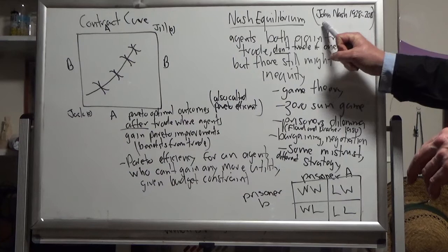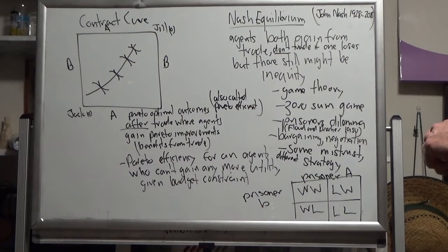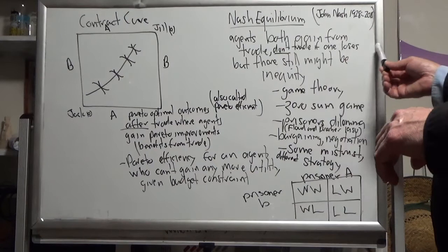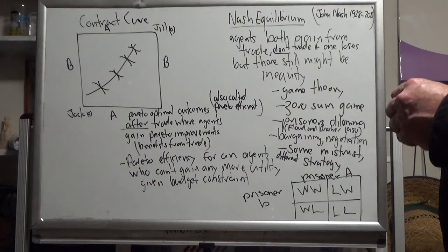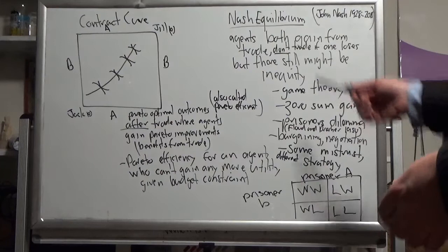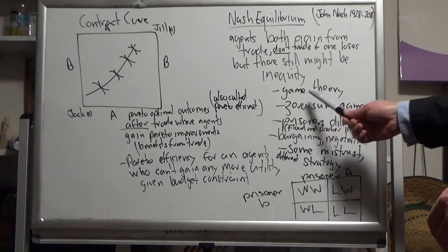Later in the timeline in the 20th century, John Nash in the US did some additional research on the Edgeworth-Bowley box. He added that agents both gain from trade and they don't trade if one loses out, but there still might be inequity in the model between the two agents. They only trade if they both gain. If one loses, they don't trade.